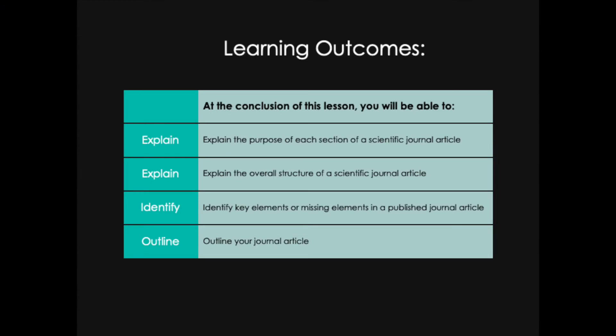I really encourage you to do all of these action items before you move on to the next lesson. Let's wrap up by reviewing our learning outcomes: make sure you can explain the purpose of each section of a journal article, explain the overall structure of a scientific journal article, identify key elements or notice when they're missing, and use the reader-writer form or classical outline to begin outlining your own paper. Once you've completed the action items and can meet all the learning objectives, you're ready to move on to lesson number two. Happy writing!